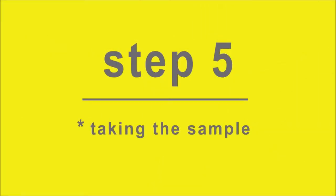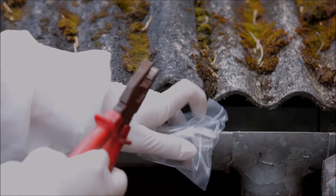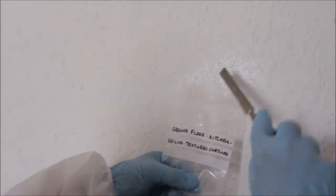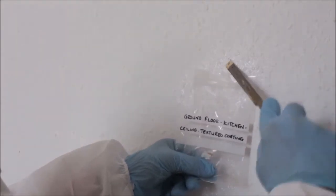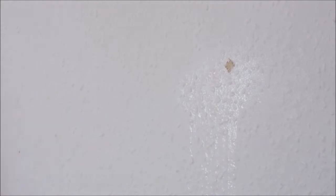Step 5. Taking the sample. For flat and corrugated sheets and panels where there is an exposed edge, use pliers. For all other materials, use a sharp chisel. Open the sample bag and place directly below the sample point, and carefully remove a small piece of the material and place directly into the sample bag. The size of the sample should be the size of a 20 pence piece.